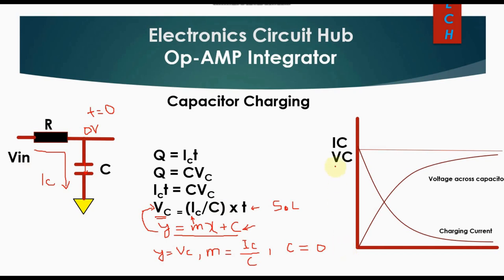At T = 0, VC = 0 and the charging current IC is very high. Once the capacitor starts charging, the voltage across it begins to develop. For example, once VC reaches 2 V, the current becomes (Vin − 2V) / R, which is significantly less than the initial current at T = 0.